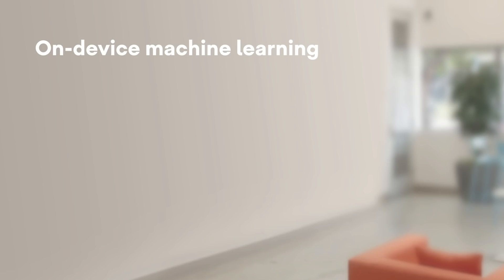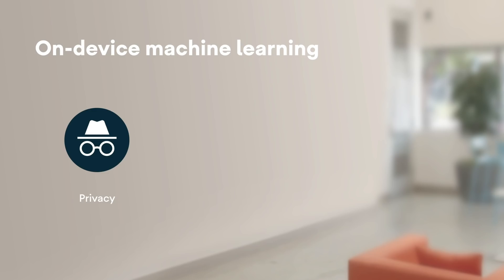Running a machine learning model on-device means you can reduce the amount of data you send to your server, enhancing user privacy. Because it runs on-device, it can also work offline — perfect for inaccessible areas such as the middle of a rainforest, a desert, or the London Underground.